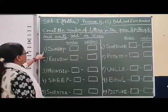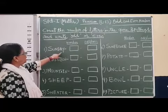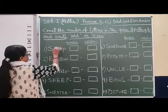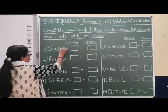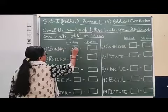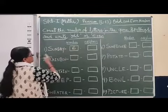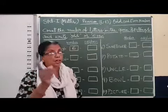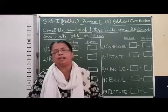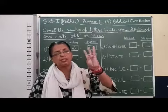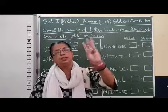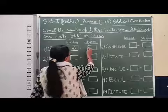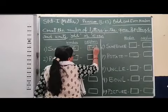The first spelling is S, E, N, D, A, Y — Sunday. How many letters are used here? We will count: 1, 2, 3, 4, 5, 6. So in this box we will write 6. Now, is 6 an odd or even number? The tip: numbers ending with 0, 2, 4, 6, 8 are even numbers. So 6 is there — that means this is an even number. So we write even here.